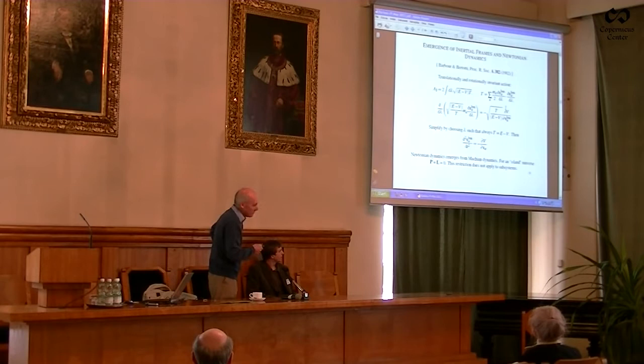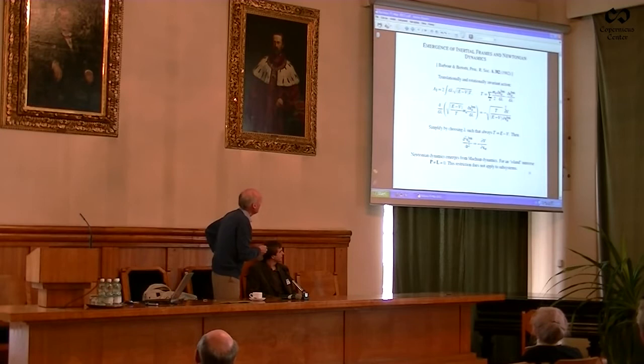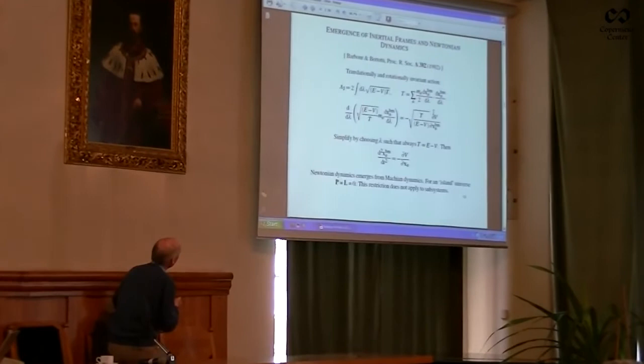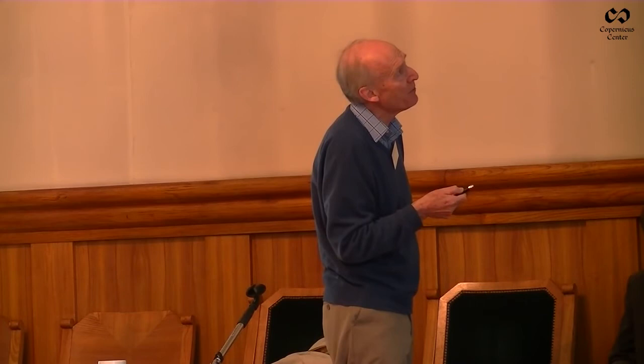I'm going to suppose that I've already found these best-matched displacements and put them into the action. I could take that lambda away completely—it's re-parameterization invariant, completely independent of the parameter, timeless in that sense. You then find the Euler-Lagrange equations that correspond to it. You get a somewhat unpleasant-looking set of equations with a bizarre-looking square root, but it cries out to be simplified. Lambda is completely arbitrary, and this means T is completely arbitrary.